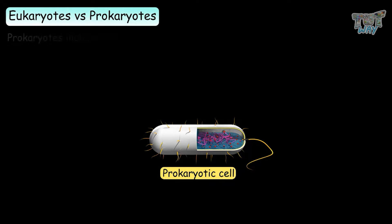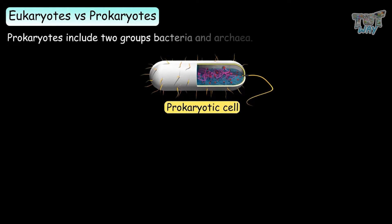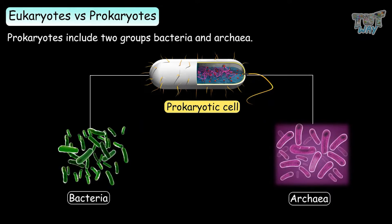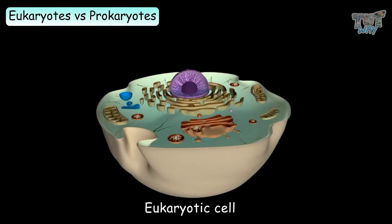Prokaryotes include two groups: bacteria and archaea. Whereas eukaryotic cells have a well-defined membrane-bound nucleus.